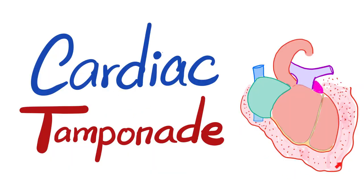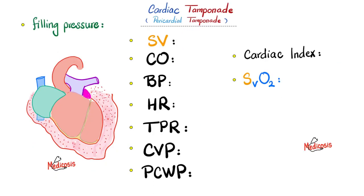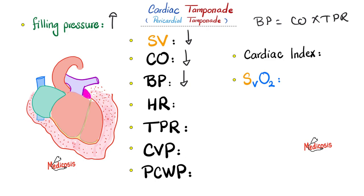Now let's review cardiac tamponade, where I have lots of fluid accumulating very quickly around the heart — to tamponade means to tamp, plug, or reduce, and the fluid is pressing on my heart. Filling pressure goes up because I have to overcome all the resistance caused by the fluid. If there is less preload — lower input — there will be low output due to low stroke volume. When cardiac output decreases, blood pressure will decrease because BP equals cardiac output times total peripheral resistance, and cardiac output equals heart rate times stroke volume.